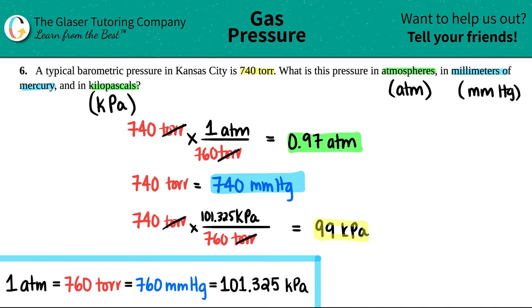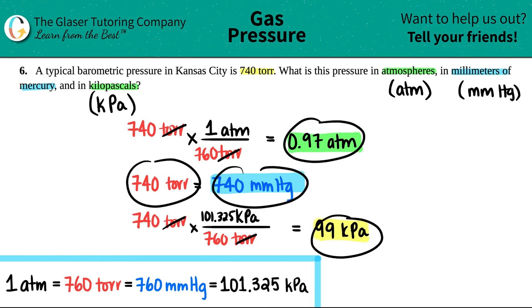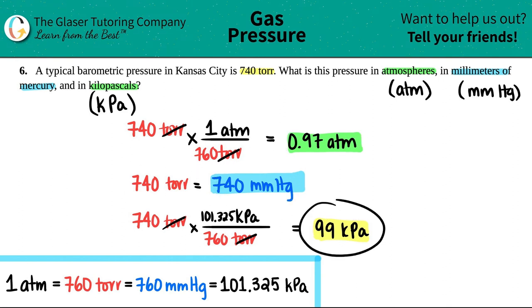And that's it. And just know this, that all of these are equivalent to each other. So 740 Torr is 740 millimeters of mercury, which is 99 kilopascals, which is 0.97 atm. Okay, so hopefully this helped. Let me know in the comments.